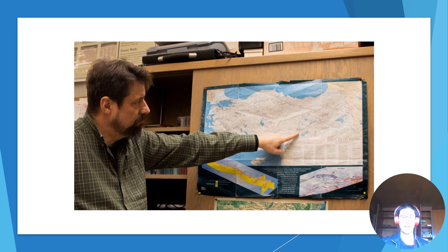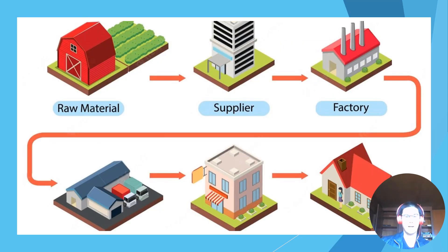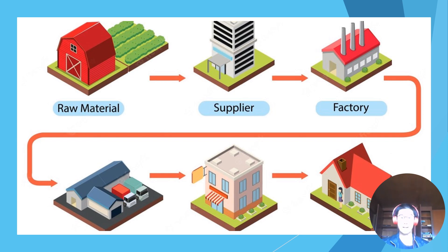GARCH is also used in wrist heart rate monitors, helping create a mean of heart rate waves. Geologists use GARCH to study and potentially predict earthquakes. There's also application in neuroscience for studying brainwaves. Supply chain management uses GARCH for understanding averages of disruptions, delays, or early deliveries — all those metrics. GARCH could be used at a deeper level of analysis to find out how accurate measurements can be.